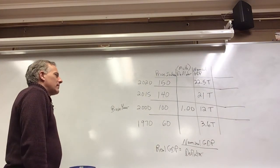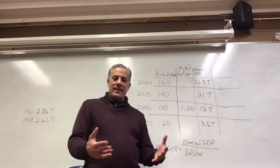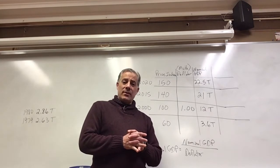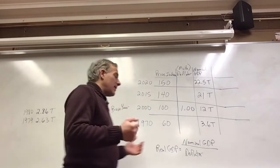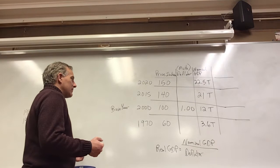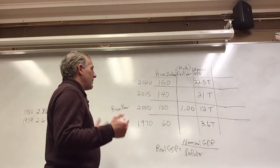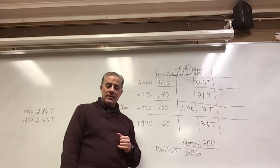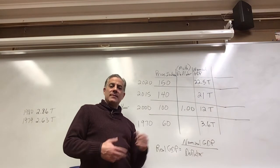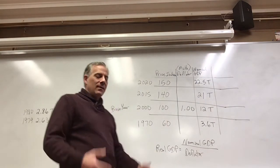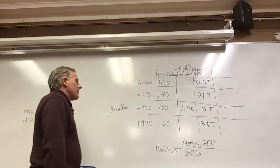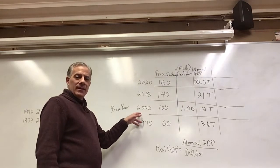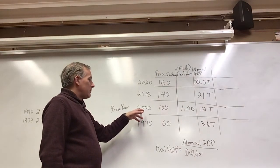As we know, economists are lazy and don't want to deal with decimal points, so we don't want to call the price index 1.5, we want to call it 150, so people think you multiply something times 150. We don't do that, but there's a base year and we're gonna use the year 2000 as our base year.